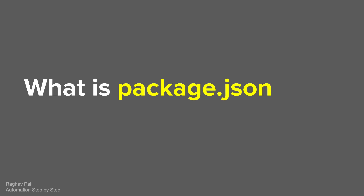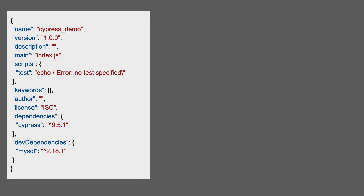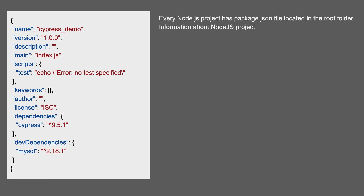Hello and welcome, I'm Raghav, and today we are going to learn what is package.json. I will go very basic step by step, so do not worry if you have never understood what exactly package.json is — I will start from scratch. Whenever you start or create a node project, you will see a file called package.json in the root folder. This is a JSON file which has information about your project like the name, description, author, list of dependencies with versions, and a lot of other things.